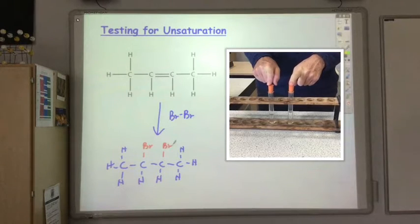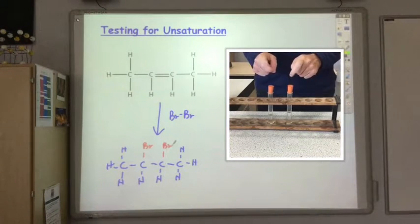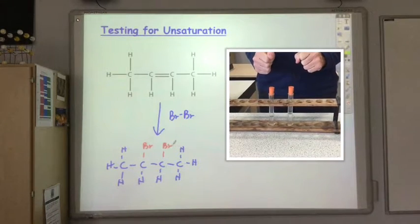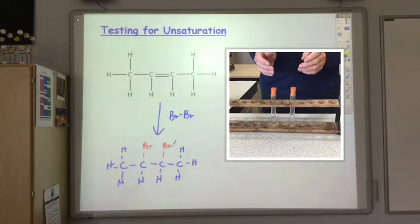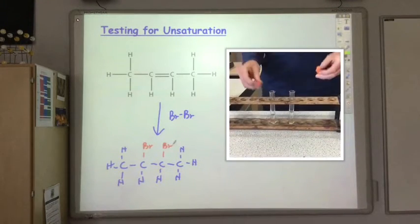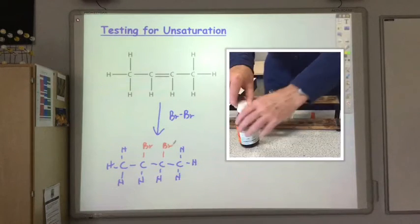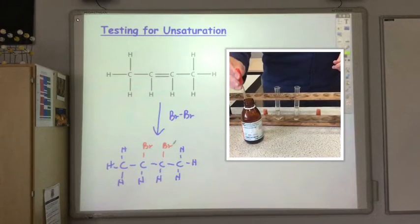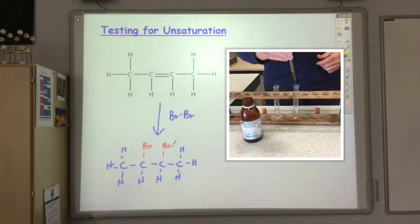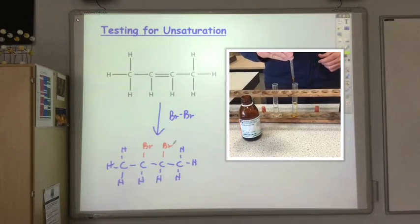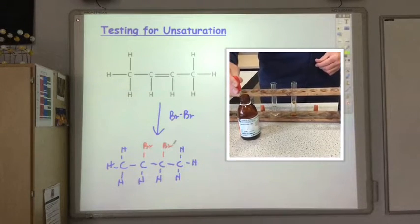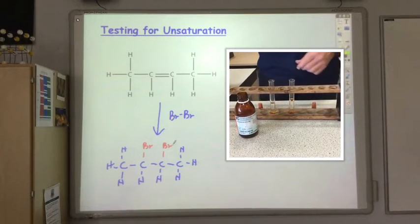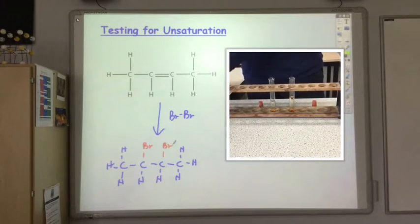In these two test tubes I've got a saturated and an unsaturated hydrocarbon. In one I've got cyclohexane and the other one I've got hexene. To find out which one's which, I'm going to add some bromine water to each one. Bromine water is just bromine dissolved in water. I'll add some here, and then I'll add some to the other one as well.